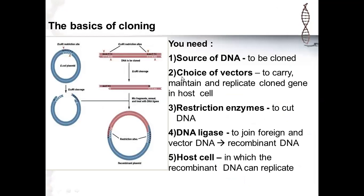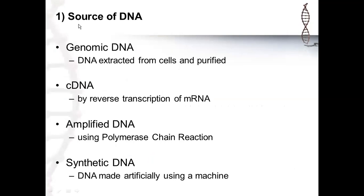The basics of cloning require: first, a source of DNA — the DNA you are interested in cloning; second, vectors — into which you are going to put your DNA, a vehicle or carrier molecule; third, restriction enzymes — to make the insertion into the vector possible; and fourth, DNA ligase — an enzyme which joins two DNA molecules. You then get the construct and put this recombinant plasmid into a host cell, which is your machine to make copies of your cloned gene.